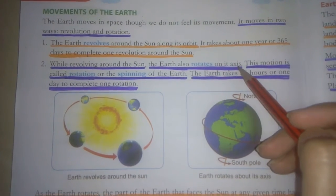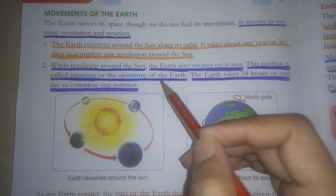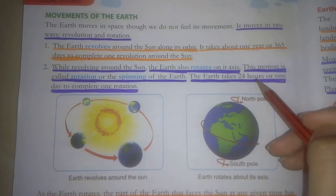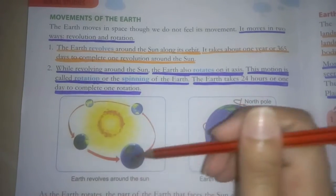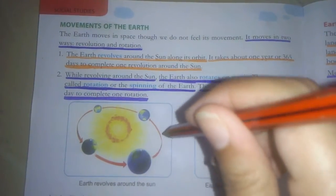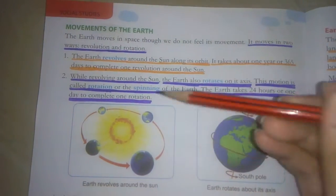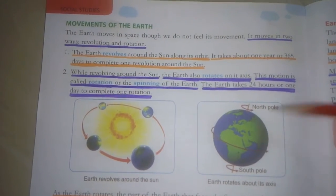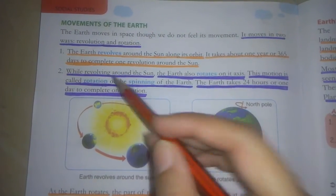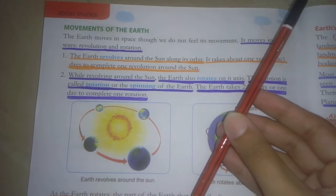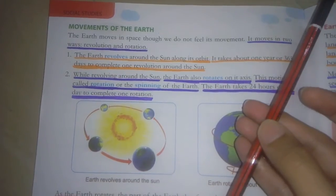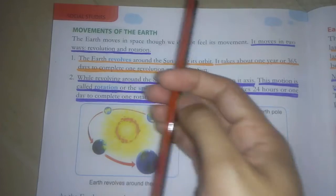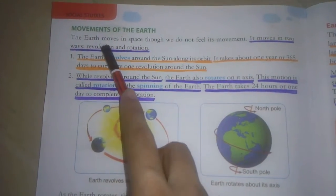The earth also rotates on its axis. This motion is called rotation or the spinning of the earth. The earth takes 24 hours or one day to complete one rotation. Along with revolution, earth also rotates on its own axis. One is revolution like this, and one is rotation on its own place like this, as shown in this picture. This motion is called rotation.